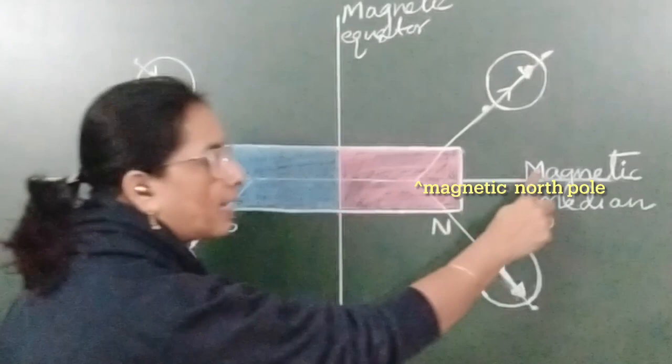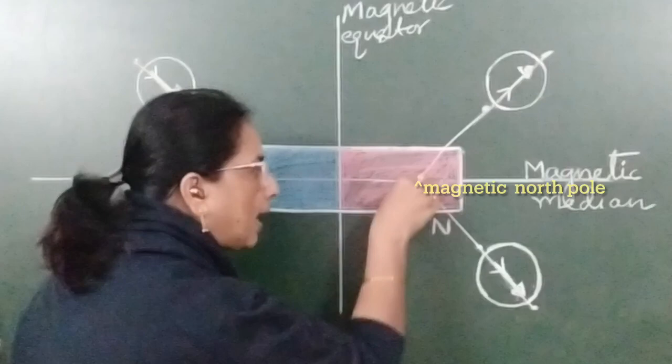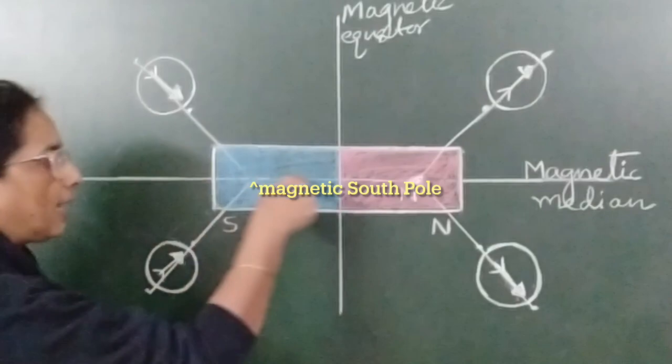Magnetic axis otherwise known as magnetic meridian. That is the point of the magnetic pole. So, the point where these two lines intersect on the magnetic meridian or magnetic axis, that point is the pole.